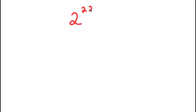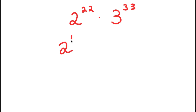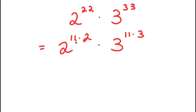In this problem, I have 2 to the power of 22 times 3 to the power of 33. To solve this, I'm going to first rewrite 2 to the power of 22 as 2 to the power of 11 times 2. And now I have this times 3 to the power of 33. 33 is a multiple of 11 — that's the same thing as 11 times 3. So this is equal to 2 to the power of 11 times 2 times 3 to the power of 11 times 3.